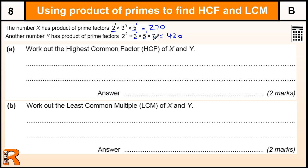There is a 7 to the power of 1 in one number, but there is no 7 in the other, so 7 to the power of 0 is the power of 7 there. So for our highest common factor to go into both of these numbers...